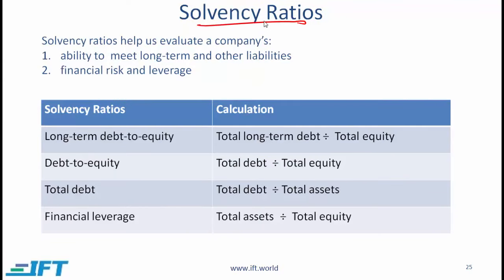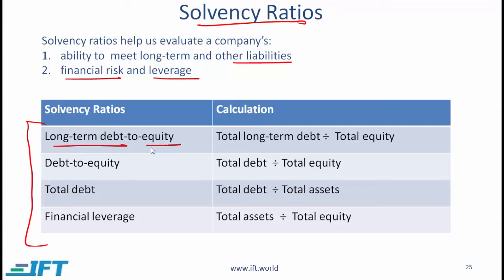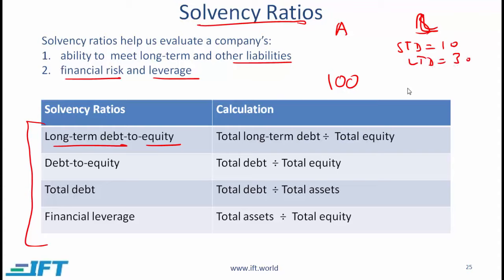Coming now to solvency ratios. These ratios help us evaluate a company's ability to meet long-term and other liabilities, and also help us evaluate financial risk and leverage. One important ratio is long-term debt to equity. For example, consider a company with assets equal to 100, short-term debt of 10, long-term debt of 30, and equity of 60. The long-term debt to equity ratio is 30 over 60.